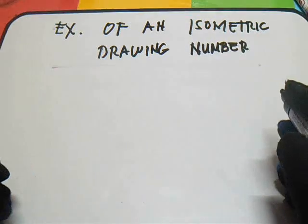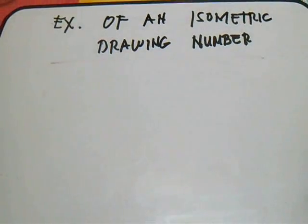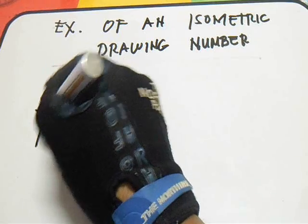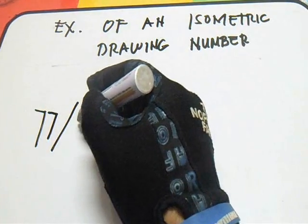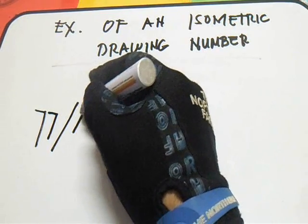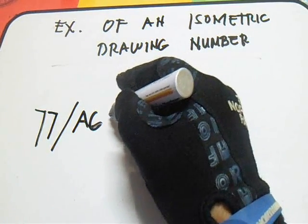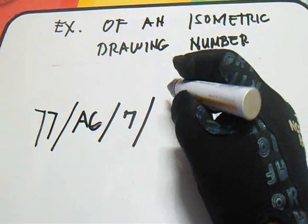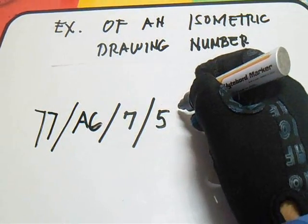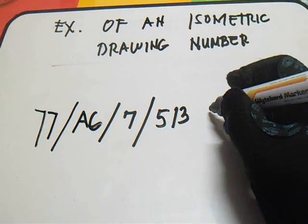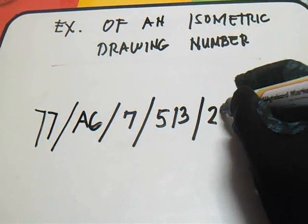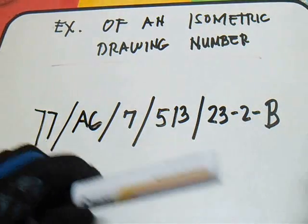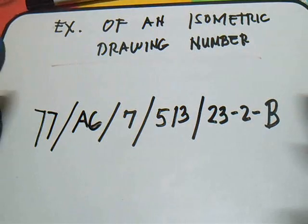So here is our example drawing number: 77 slash AG slash 8 slash 513 slash 23 dash 2 dash V. This is the drawing number in the isometric — the isometric drawing number.